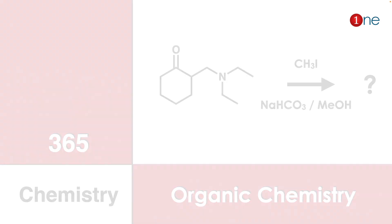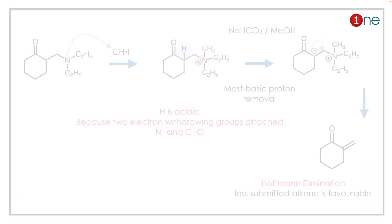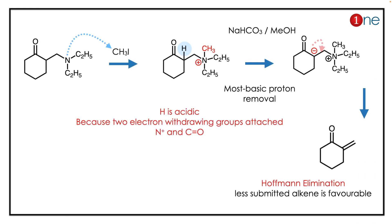Here, the amine reacts with methyl iodide to form a methylated quaternary ammonium salt. This makes nitrogen a good leaving group. The alpha proton is acidic because it is positioned between the carbonyl group and the nitrogen.